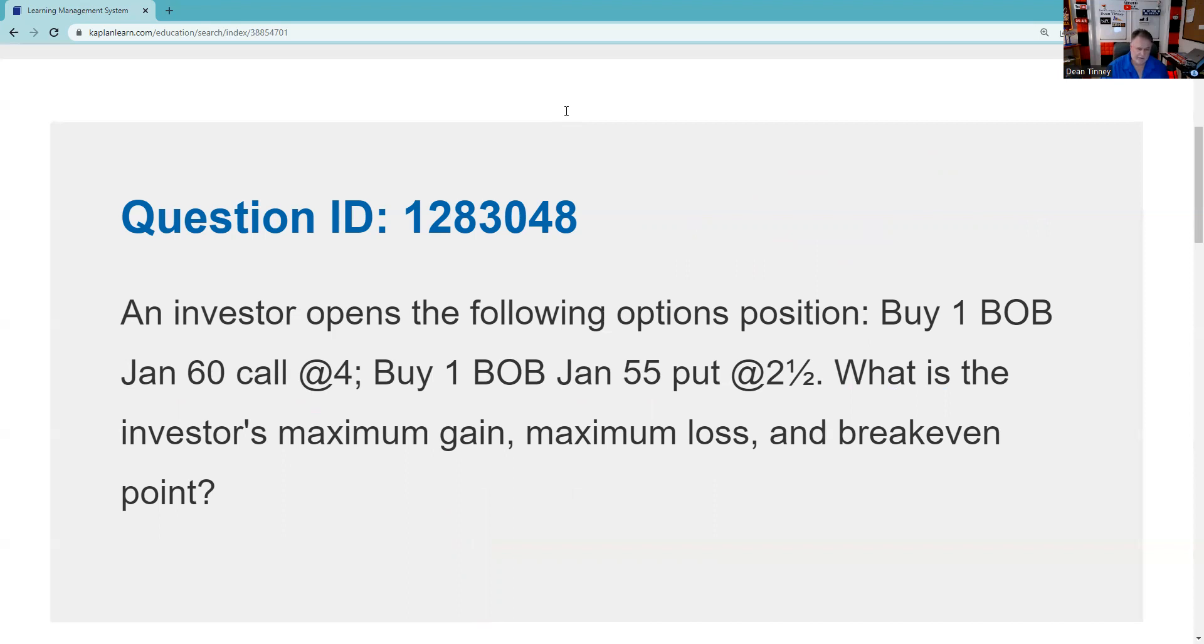And then when do you use it? Here, you're expecting volatility, but direction's uncertain. So here we're looking at a choice or right to buy the stock at 60. We're looking at a choice or right to sell the stock at 55. Our maximum gain is unlimited because we have a long call. That leg has unlimited gain potential. Our maximum loss is what we paid for the position, which is 6.5.